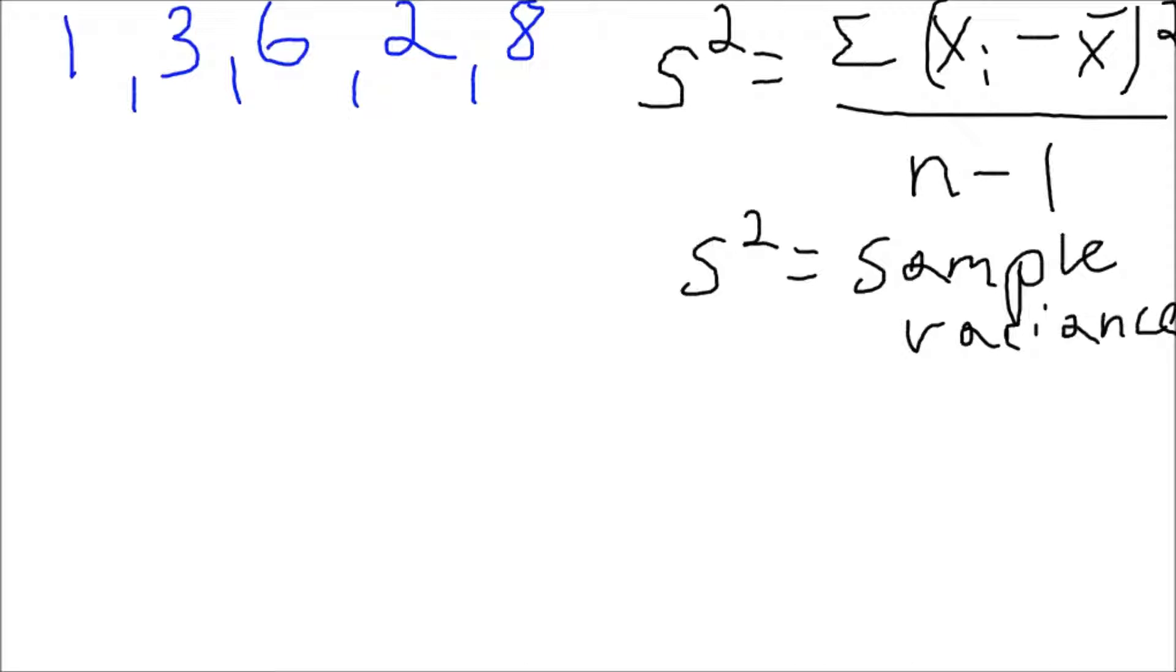And so let's break it up into the first column, we'll just call that x_i which is basically just going to be all our terms that we see going down or up here: 1, 3, 6, 2, 8.